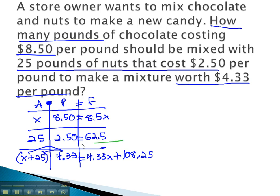Again, if we combine the individual pieces together, that'll give us an equation equaling the total that we can solve: 8.5x plus 62.5 equals 4.33x plus 108.25.